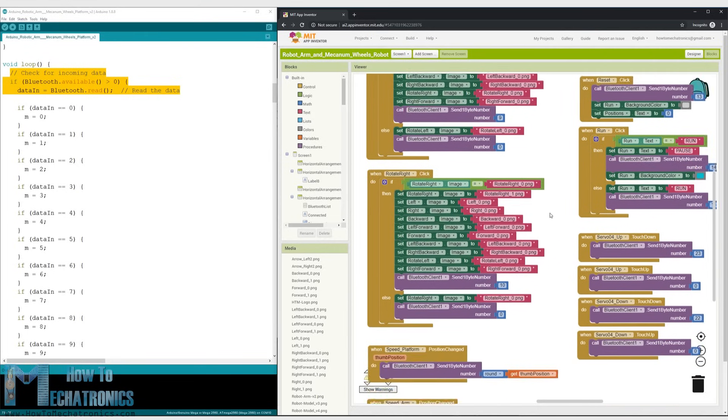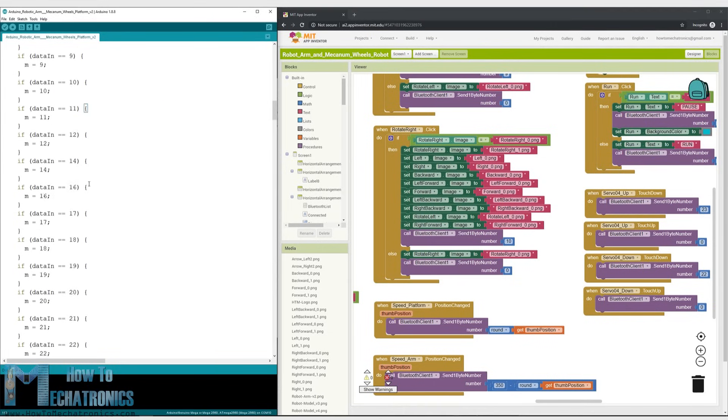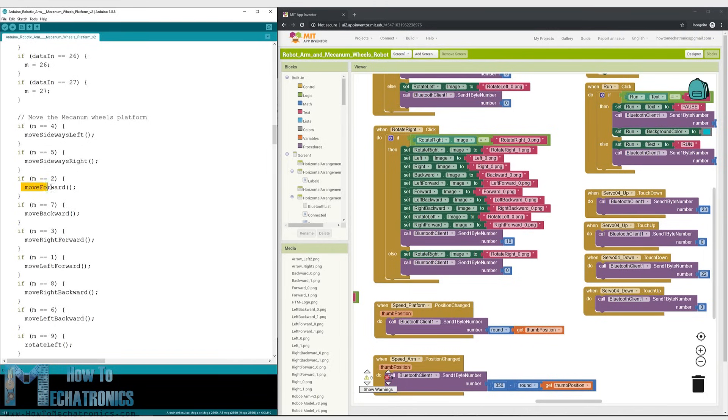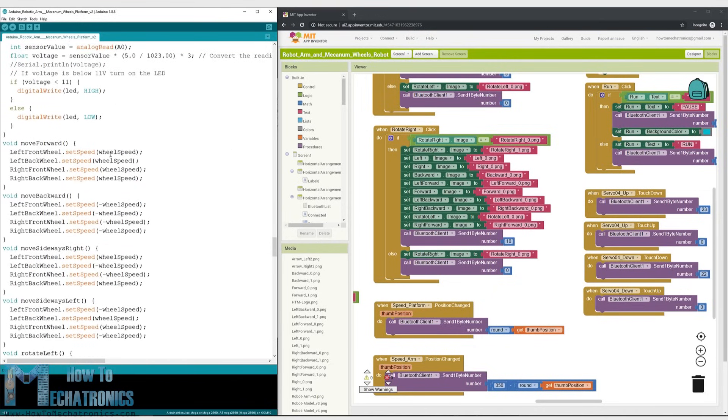So depending on the clicked button we tell the Arduino what to do. For example, if we receive the number 2, the Mecanum Wheels platform will move forward, using the MoveForward custom function. This custom function sets all 4 stepper motors to rotate forward. For moving in any other direction, we just need to rotate the wheels in the appropriate directions.